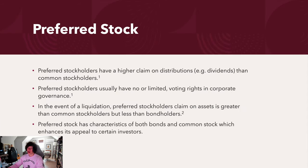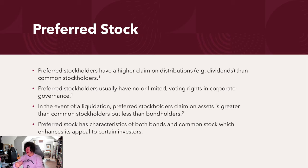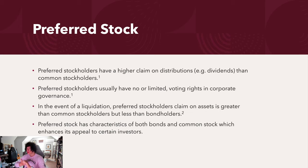Preferred stockholders have a higher claim on distributions — for example, dividends — than common stockholders. One strategy for many stock traders is to hold stocks that produce dividends, which are payouts by the company on a regular basis. For example, if the dividend is $10 and you hold 1,000 shares, you'd receive that payout quarterly. If the stock goes through liquidation, preferred stockholders have more claim to assets and distribution rights than retail common stockholders. Their claim on assets in a liquidation is greater than common stockholders.